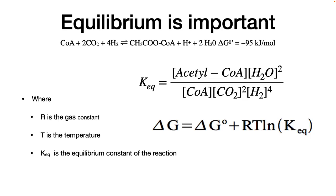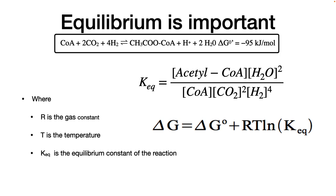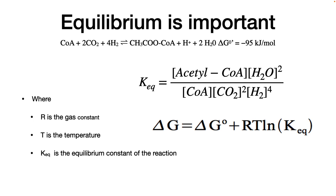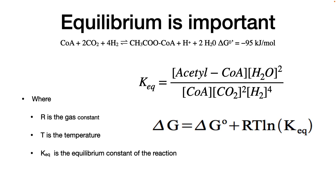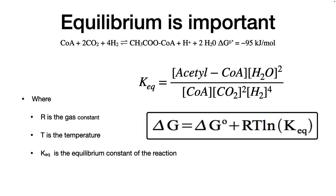The third concept: equilibrium is important. Another principle for chemical reactions is equilibrium. Imagine the carbonation of carbon dioxide, hydrogen, and coenzyme A to form acetyl coenzyme A — a process carried out by acetogens. The equilibrium constant, K-EQ, of this reaction can be represented and used to calculate the free energy of the reaction. This is important for biology, so why am I bringing up potentially unpleasant memories from chemistry class?